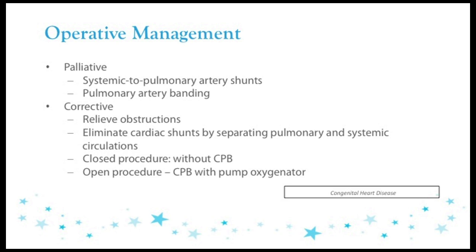The operations can be palliative, which means that they are performed for a short period of time so that the baby can grow. These are based on two basic things. One is that if there is not enough blood flow that gets to the lungs, then we'll do what's called the systemic to pulmonary artery shunt, increasing the blood flow to the lungs. If there is too much blood flow to the lungs, then we can do a pulmonary artery banding, which decreases the flow and allows the baby to grow older.